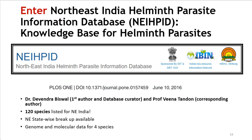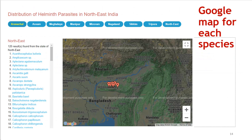Devendra Biswal has put together a database with Professor Veena Tandon as the corresponding author, available since 2016, sponsored by DBT, IBIN, and NEHU. This is the Northeast India Helminth Parasite Information Database, which provides a list of 120 species, a northeast state-wise breakup of those species, and genome and molecular data for four species at the moment — though quite a few more are under sequencing and finalization. Very cleverly, they have used Google Maps to show where these species were recorded, thanks to a large number of volunteers and students who collected the data.